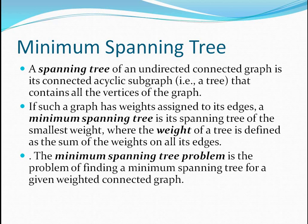If such a graph has weights assigned to its edges, then it is possible to obtain a minimum spanning tree. A minimum spanning tree is a spanning tree with minimum weight. Generally, the weight of a tree is defined as the sum of the weights of all edges. The minimum spanning tree problem is therefore the problem of finding a minimum spanning tree for a given weighted connected graph.